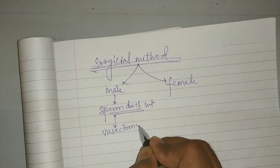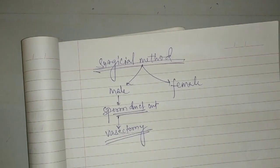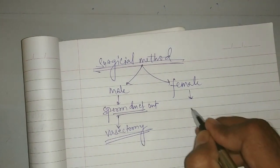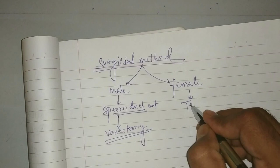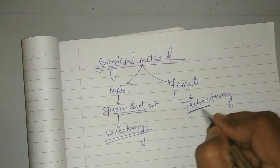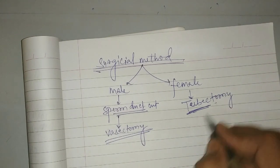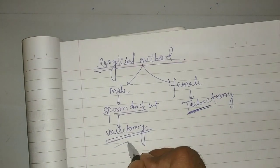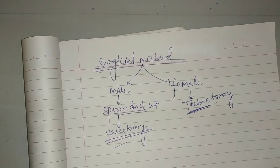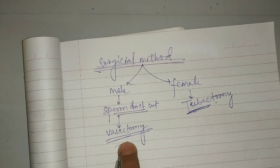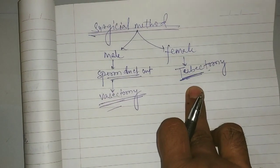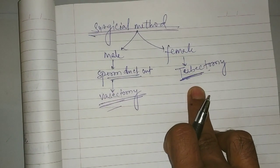Vasectomy. This is the method we call vasectomy. In females, it is tubectomy. Tubectomy - fallopian tube tubectomy.